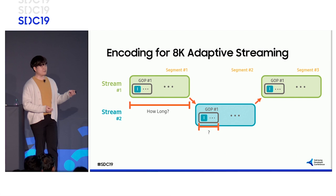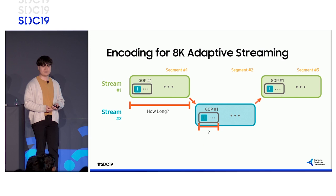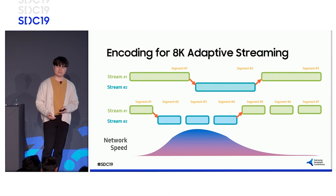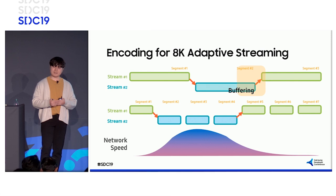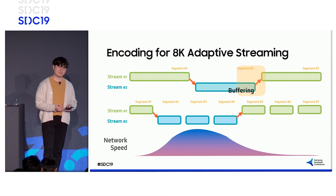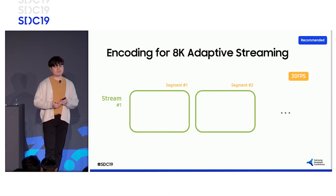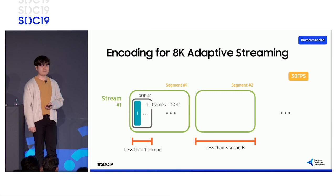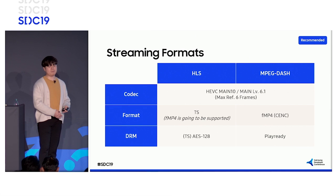Determining the length of group of pictures and the length of a segment is one of the most important points. The smaller the length of a GOP, the more I-frames are made per segment, which can directly affect picture quality and encoding efficiency. The length of a segment affects sensitivity to network conditions — a longer segment can make it difficult to switch between streams even when your network slows down, which can cause buffering. We suggest the encoding guidelines as follows: a segment less than three seconds, a GOP less than one second, and one I-frame per GOP. LHLS and DASH methods, as well as fMP4 on HLS, will all be supported.